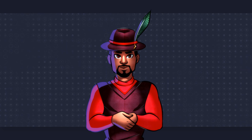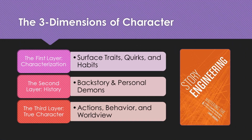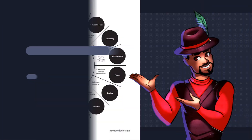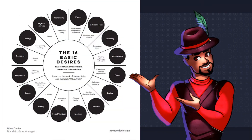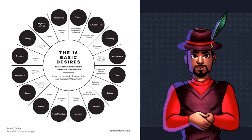I believe that writers can create believable, relatable, and compelling characters by understanding their deepest desires and motivations. To do this, we simply need to use the 16 basic desires as a guide. I explained my logic in a past video, which I recommend watching before continuing. If you are on the same page with me now, we'll start our 16-part exploration by tackling the desire for acceptance.